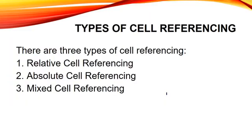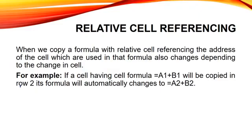These cell references are of three types. In MS Excel we have three types of cell referencing. First is termed as relative cell reference. Second is termed as absolute cell reference. And the third is termed as mixed cell reference. In relative cell referencing, when we copy a formula with relative cell reference, the address of the cells used in that formula also changes depending on the change in the cell.